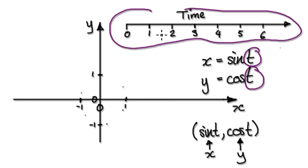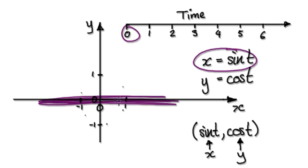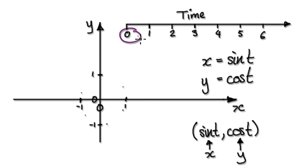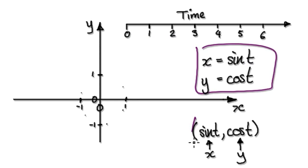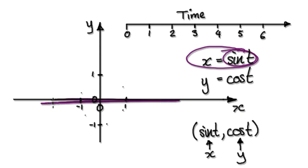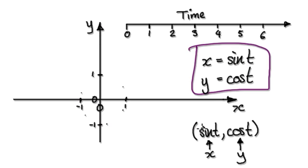You can imagine the parameter as being time. So when time is 1, the location will be — don't forget, this here represents the x direction, where exactly along the x direction. This will represent exactly where it will be on the y direction. This bit here tells you the x-coordinate, and this tells you the y-coordinate.